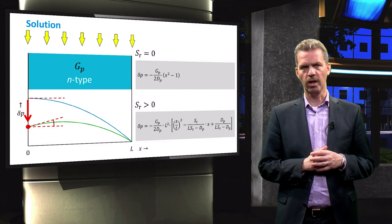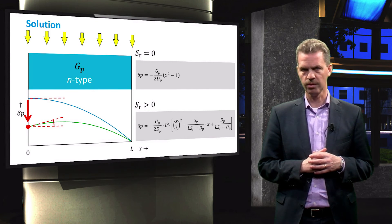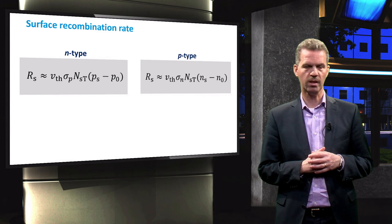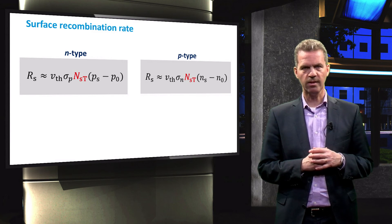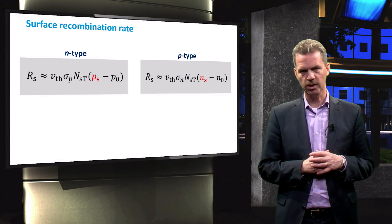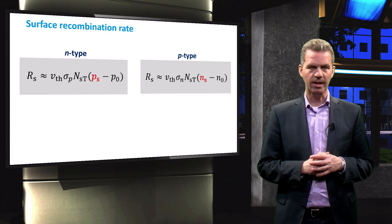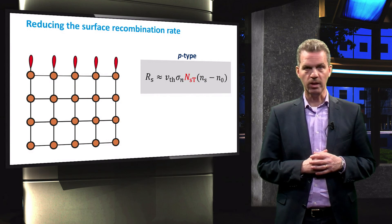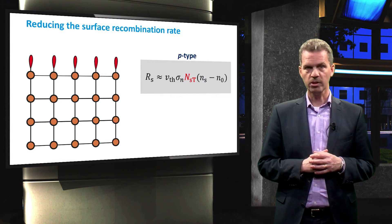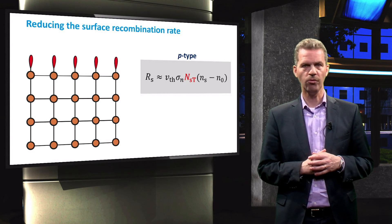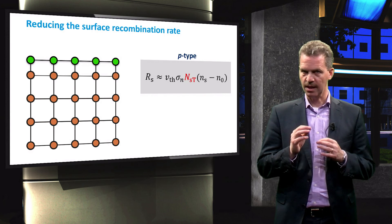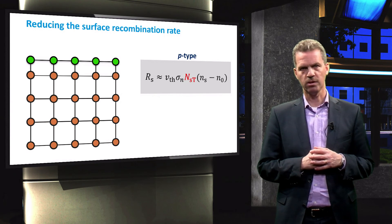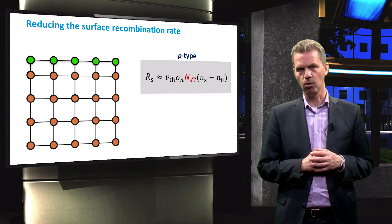A low surface recombination rate is crucial for high-quality solar cells. Looking at the recombination rate, there are two parameters we can influence: the surface trap density and the minority carrier concentration at the surface. Starting with the surface trap density, we can reduce the dangling bond density by depositing a thin layer of a suitable material onto the semiconductor surface. This allows the valence electrons on the surface to form a covalent bond, which reduces the surface trap density. This process is called passivation.